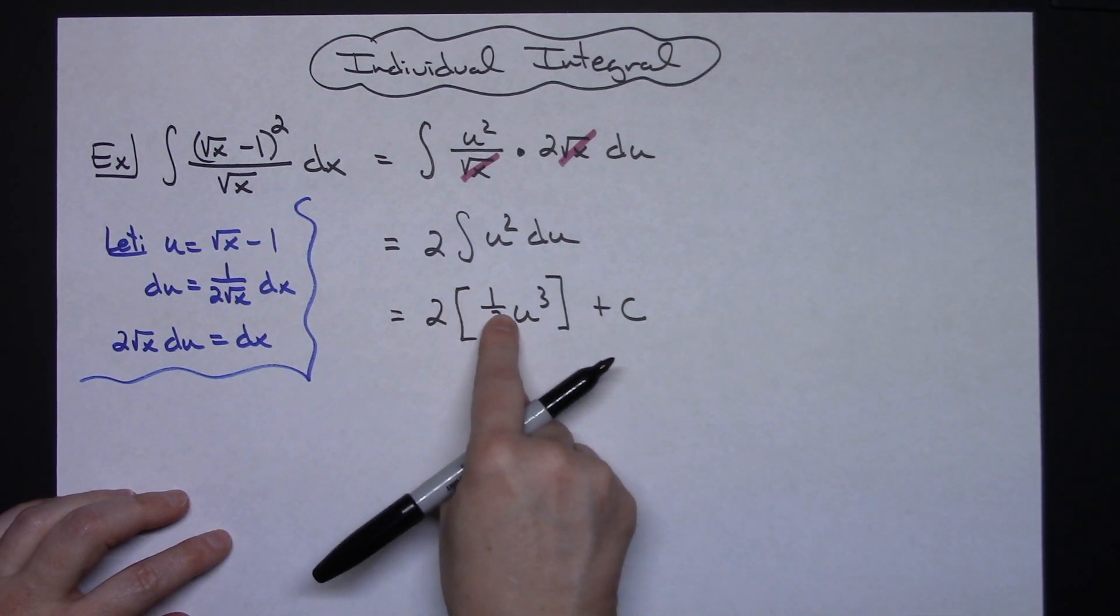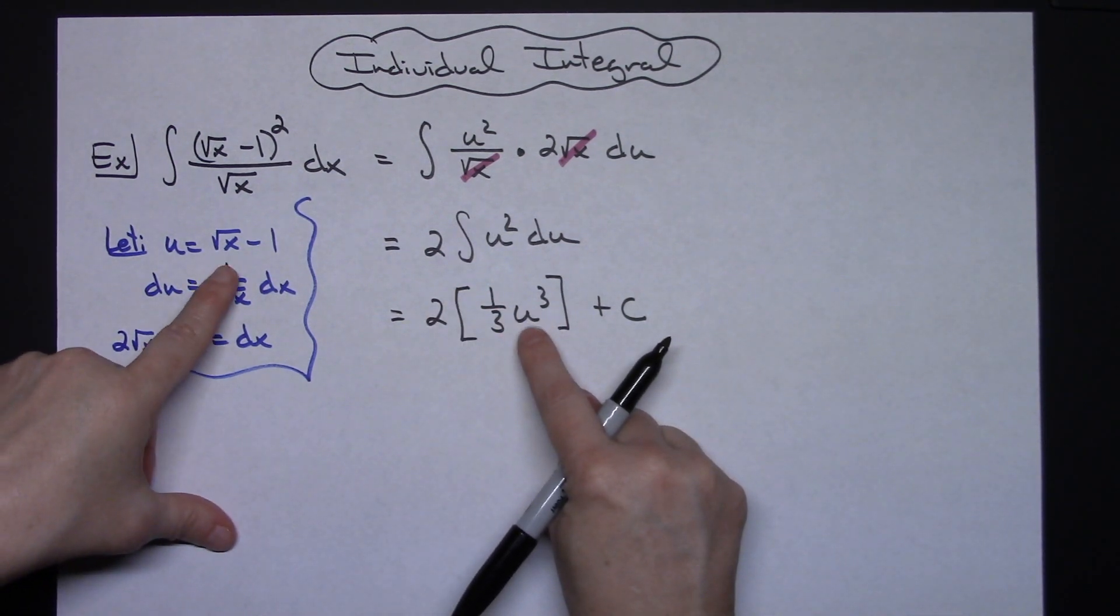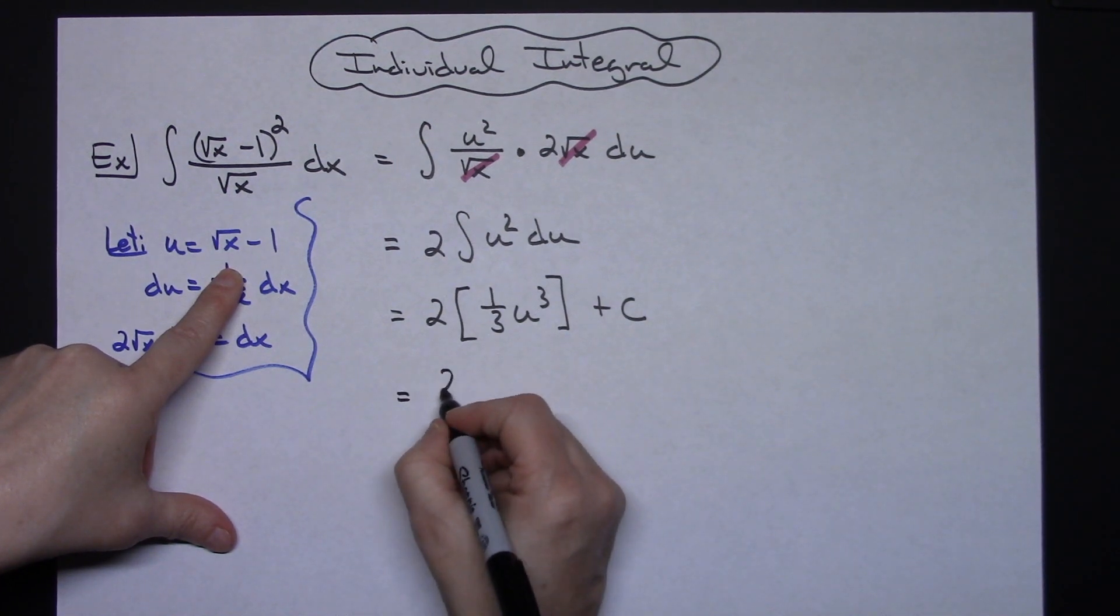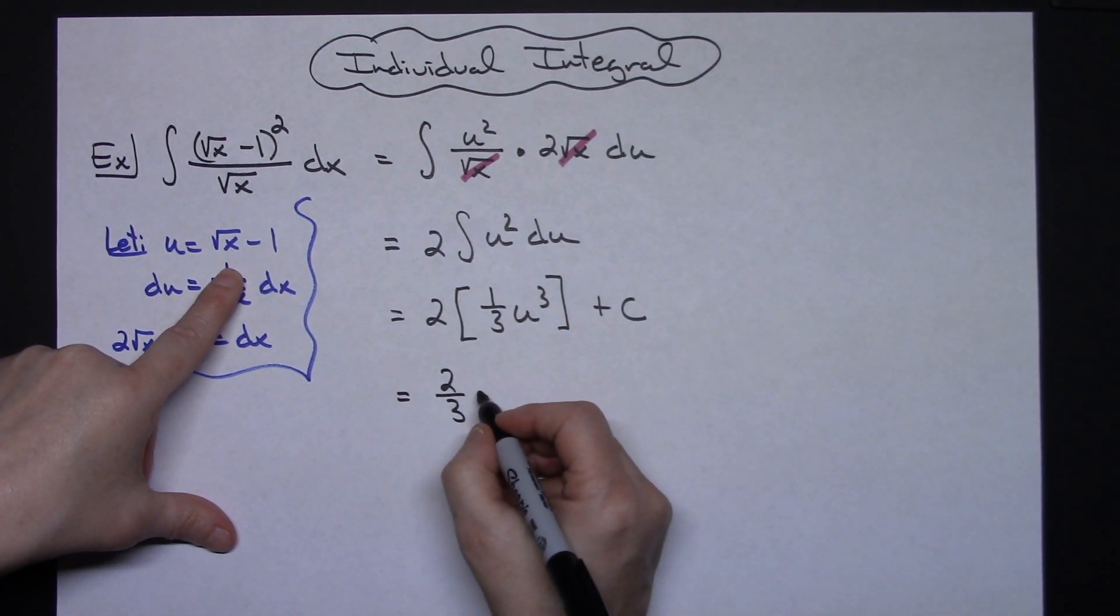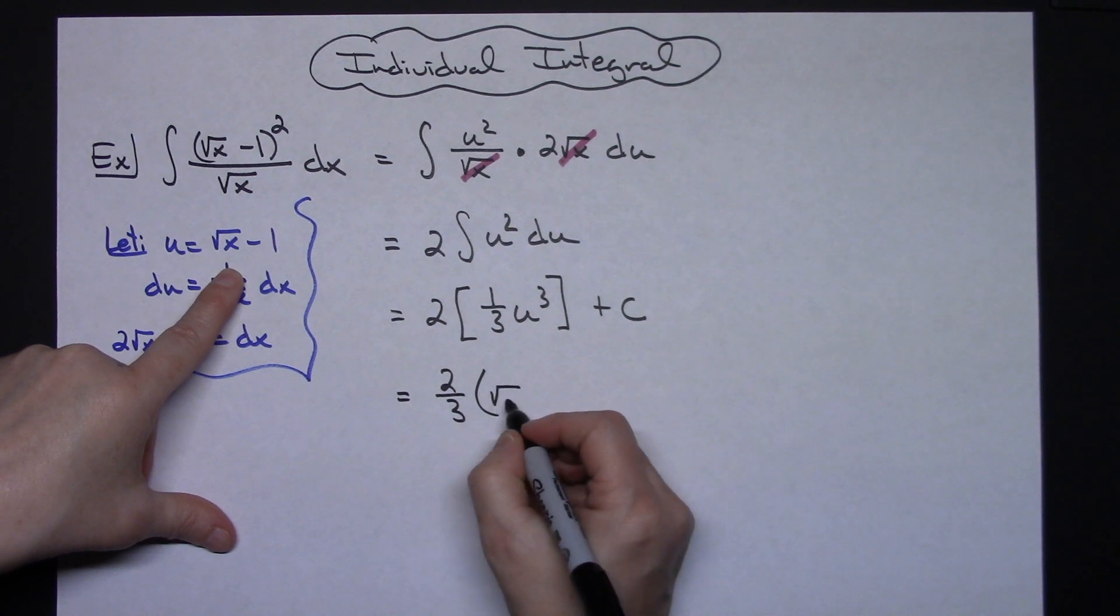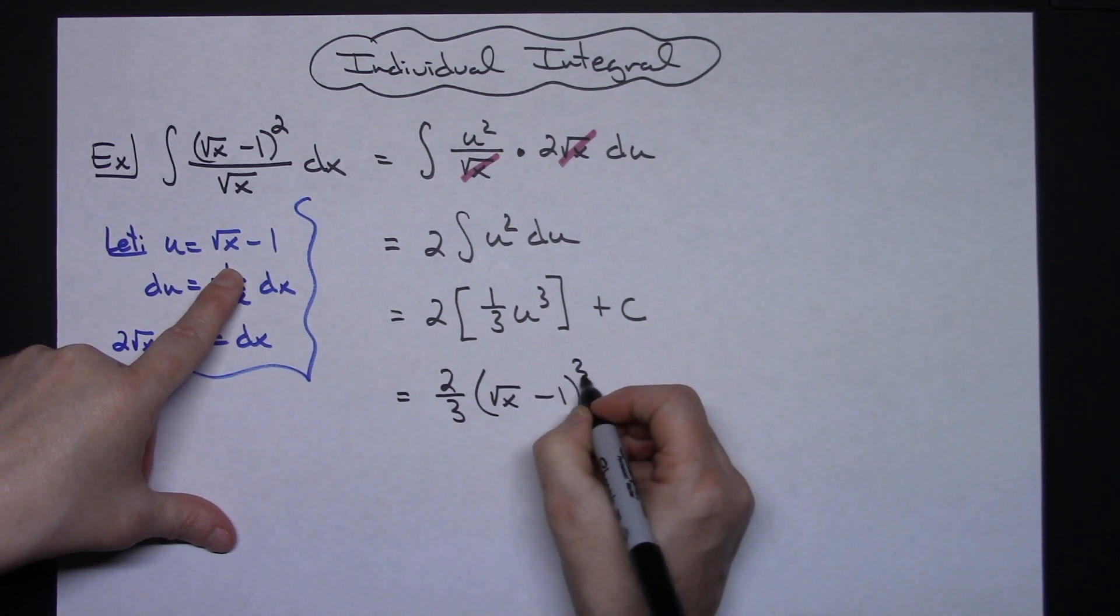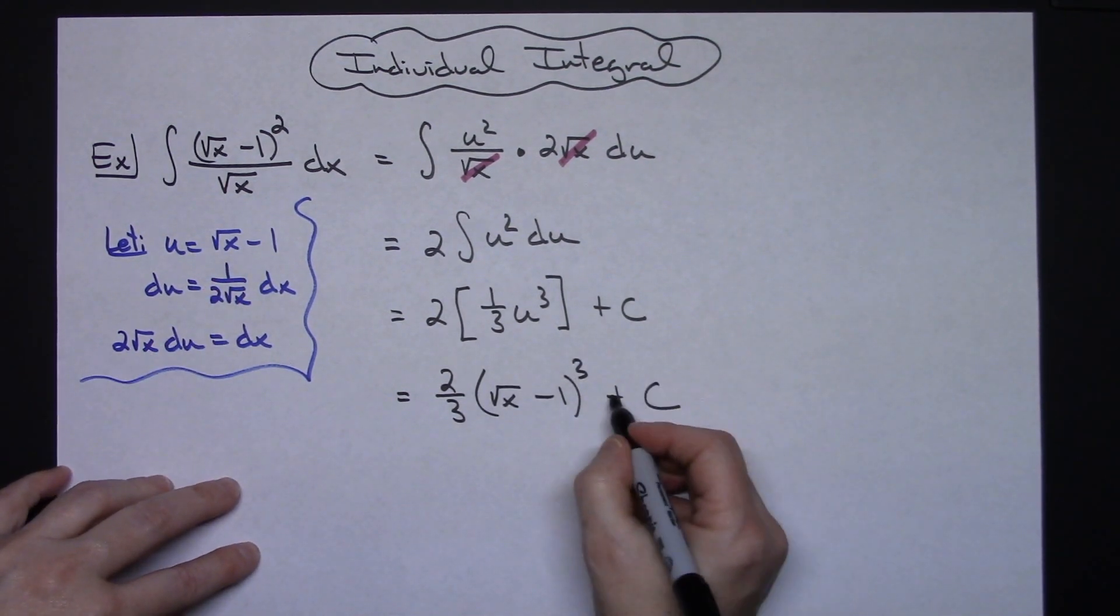All in the same step here, I'm going to multiply 2 times that 1 3rd and replace u with what it is equal to. So we'll have a 2 3rds replacing the u. We'll have a square root of x minus 1 to the 3rd power plus c.